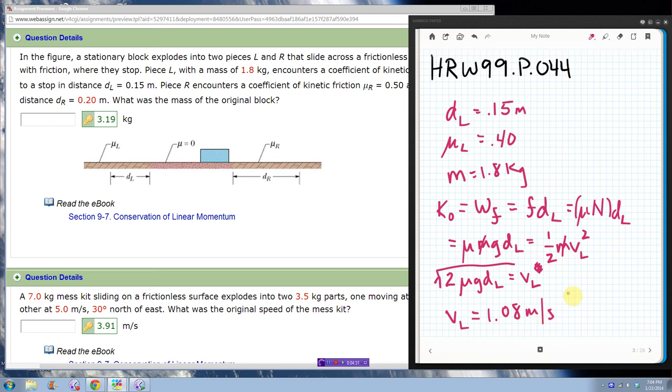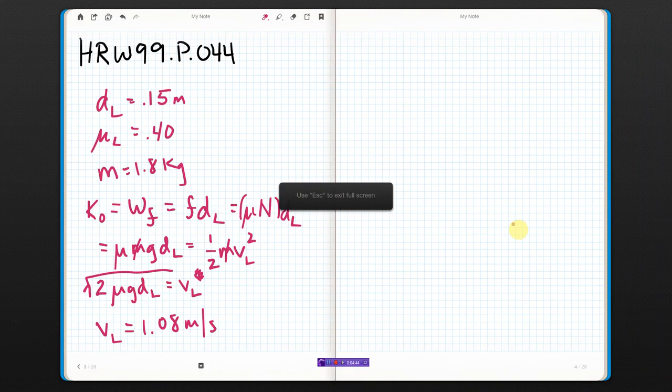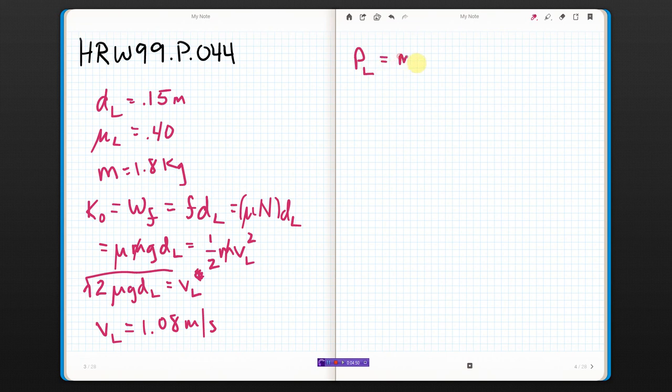We're just going to kind of store that for right now. Well, that means that the momentum of the left-hand block right after the recoil would have been mass times velocity. So that would have been 1.8 times 1.08. So the momentum of the left-hand block right after the collision should have been 1.95.